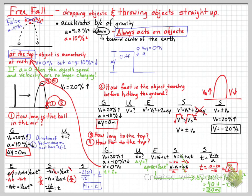We've focused on throwing objects upward since that case has the most potential for mistakes and misconceptions. The other common scenario is dropping objects — for example, dropping from a cliff. When you drop an object, the initial velocity in the y-direction is zero because you're just holding it, then gravity pulls it down at 10 m/s². You'll have displacement in the y-direction as a given. These problems are actually simpler because all the vectors agree in one direction. We'll do lots of practice with this next time.